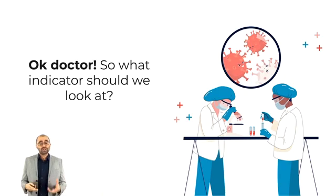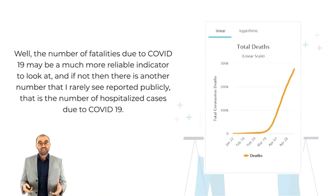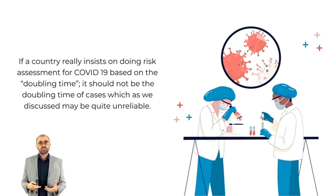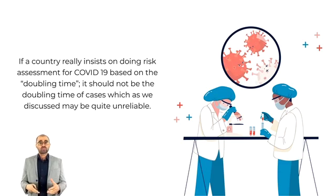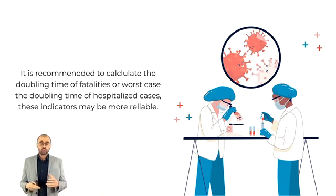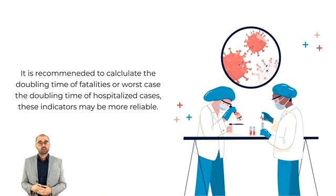So what indicator should we look at? The number of fatalities due to COVID-19 may be a much more reliable indicator. And if not, there is another number that I rarely see reported publicly: the number of hospitalized cases due to COVID-19. If a country really insists on doing risk assessment based on doubling time, it should not be the doubling time of cases, which as we discussed may be quite unreliable. It is recommended to calculate the doubling time of fatalities, or in the worst case, the doubling time of hospitalized cases. These indicators may be more reliable.